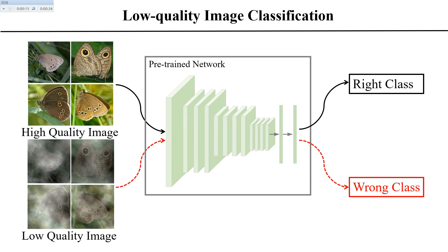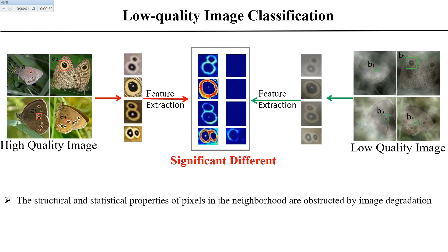Given a low-quality image, the accuracy of each network will drop greatly. The reason is that the structural and statistical properties of pixels in the neighborhood are obstructed by image degradation. We choose four structurally similar patches A1 to A4 from different clear images and show the low-level feature response using VGG. As shown, clear image patches have uniform feature response. However, due to degradation, the feature response of low-quality patches looks significantly different from that of high-quality patches.